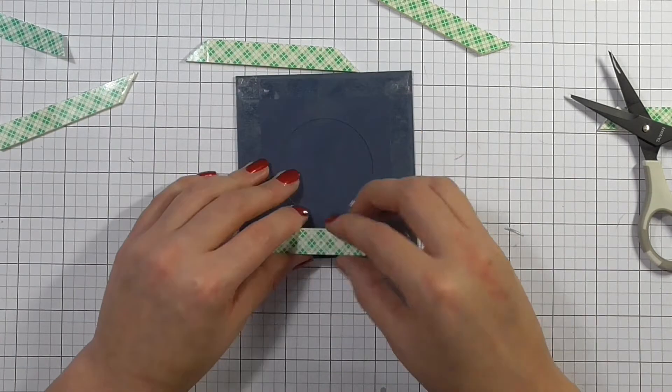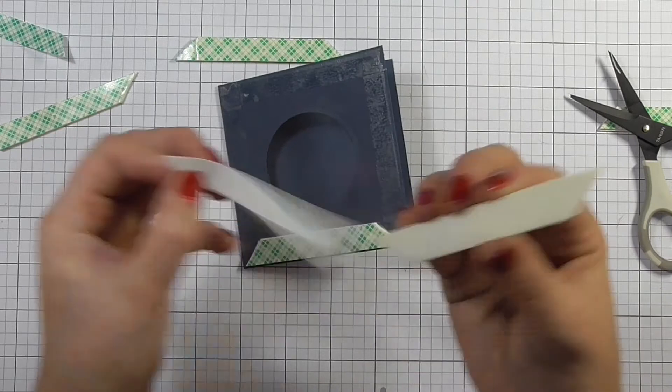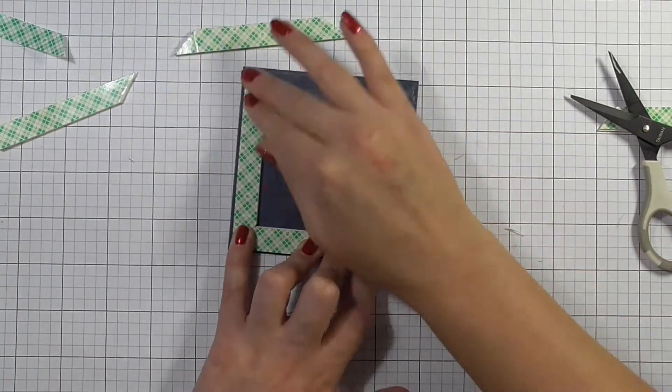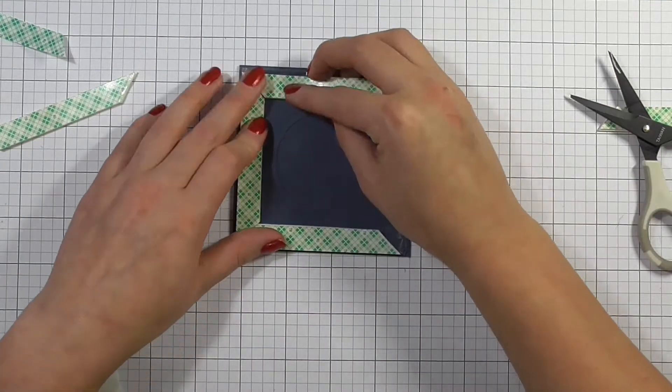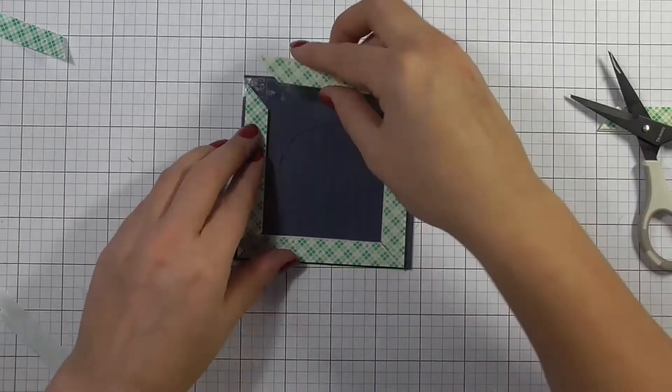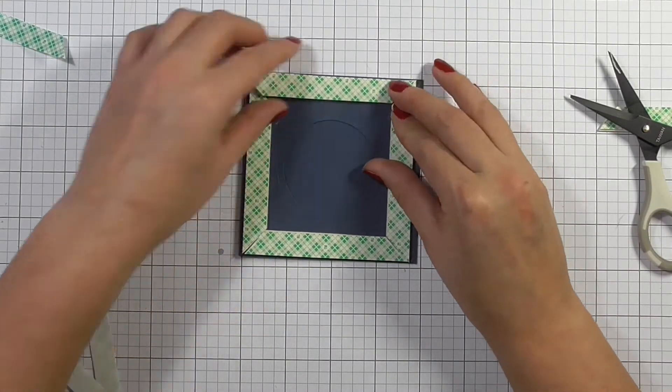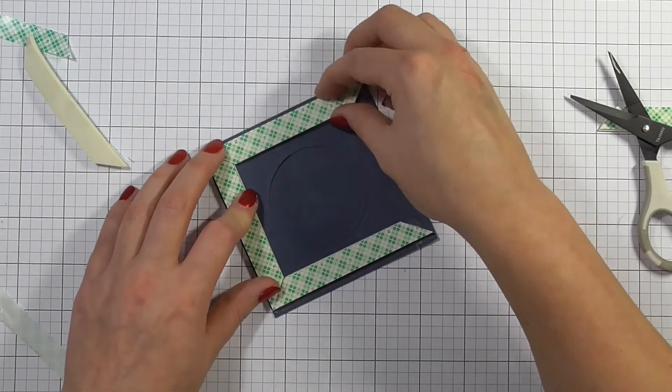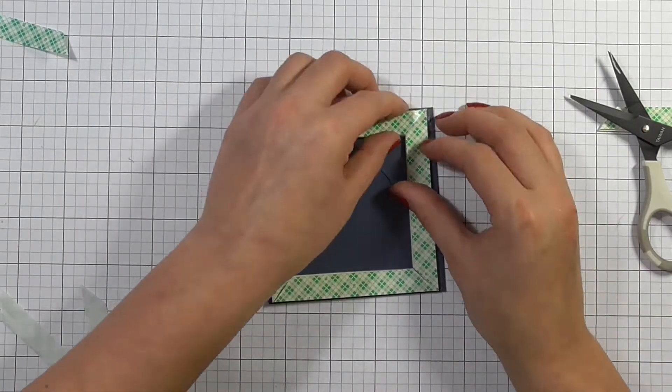I just think it looks nicer. The first thing that people tend to do when they get a shaker card is they sort of tilt the card to the side and they try and take a look at how you created this raised box area with all the sequins. So I think if you miter the corners...